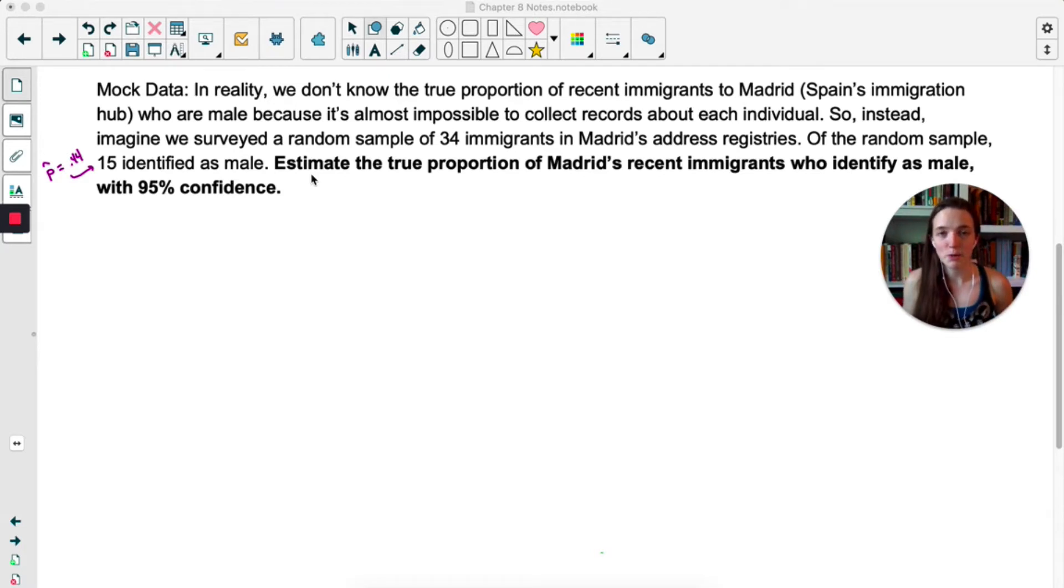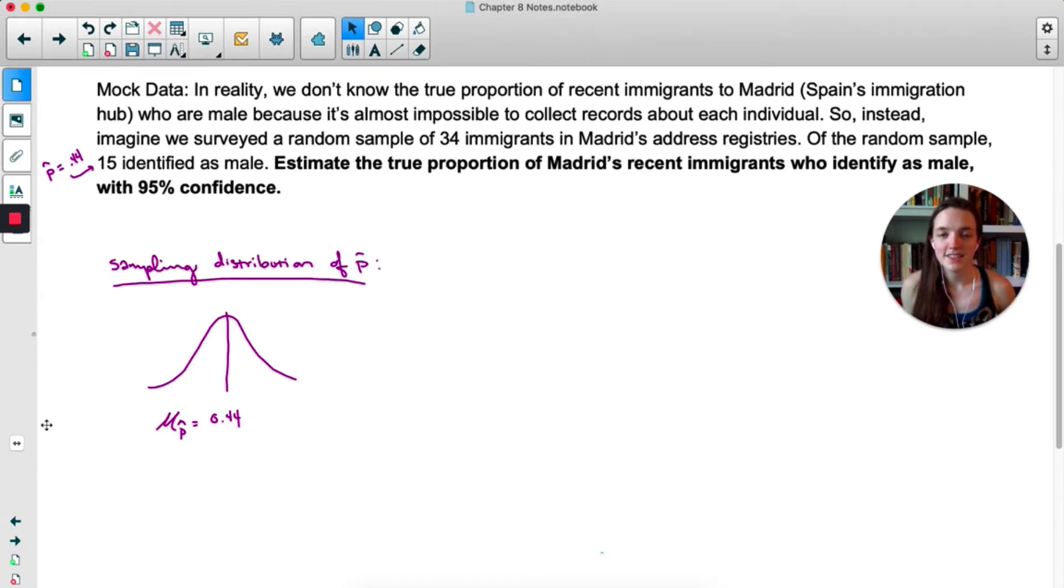In bold is what we're supposed to do. Estimate the true proportion of Madrid's recent immigrants who identify as male with 95% confidence. So we'll start this the same way we started the book example. We want to think about the sampling distribution of P hat. So once again, sampling distribution, this would be taking every possible sample of size 34 and calculating the proportion of males in all of those samples. Obviously unrealistic, so we're doing an approximate sampling distribution here. We're imagining what it would look like. Now the first thing we need to note is that this was a random sample.